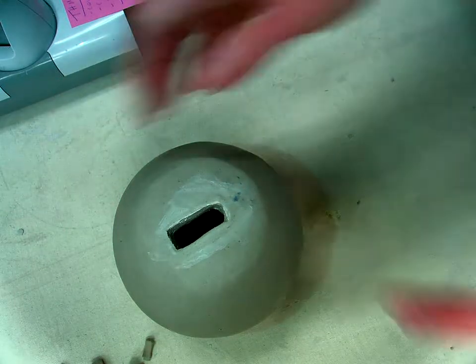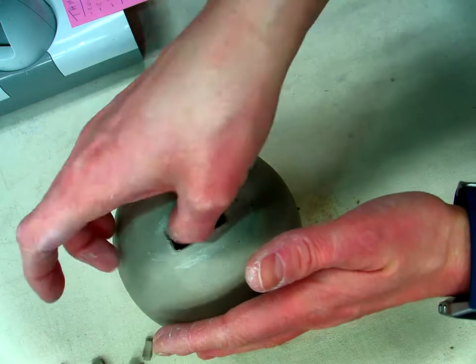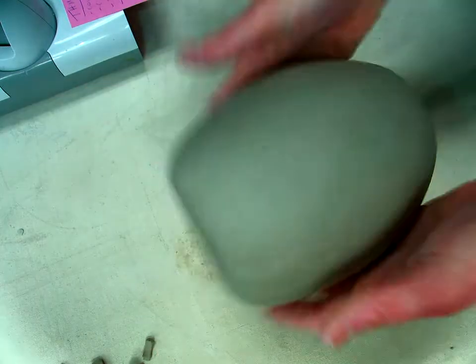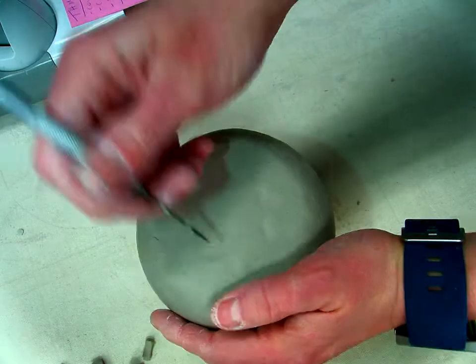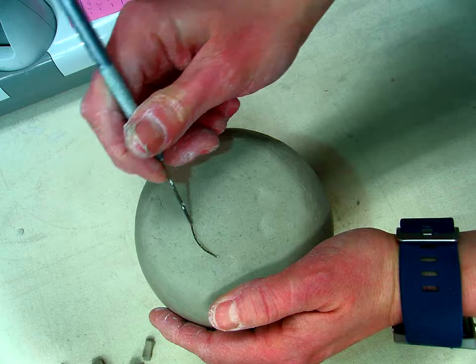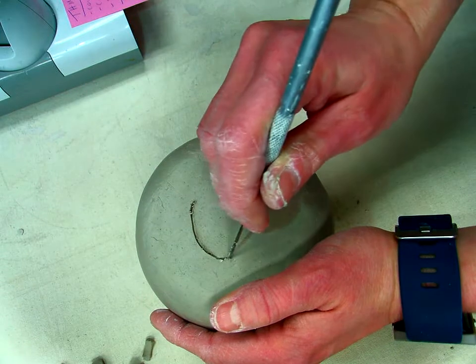And then we're ready to do the hole for the bottom. So I'm going to flip this over. And on the bottom here, it doesn't have to be a huge hole, but you want it bigger than a quarter definitely. So that the money will come out easier.